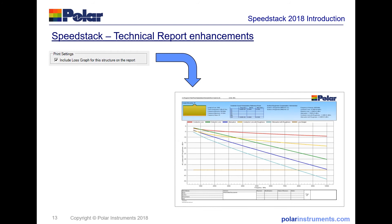You don't need to print out every structure. Simply by selecting 'include loss graph' in the structure of the report in the print settings, this will select only the structures where you're interested in insertion loss.